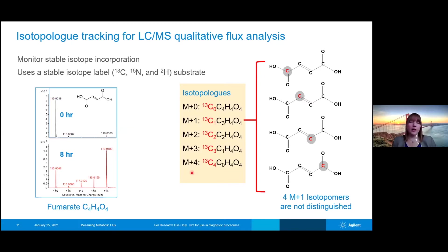When we talk about isotopologues, we're really talking about combining all the isotopomers of a given mass. In fumarate, if we have an M+1 mass — so there's one carbon-13 label — that carbon-13 label can be at any position within the fumarate molecule, and we just combine all of those together in our analysis. So we're looking at isotopologues instead of the specific isotopomers. To look at isotopomers, you would need fragmentation, which is something you can do but is not typically done in this qualitative flux analysis.